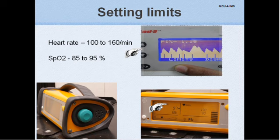Setting alarm limits is an important aspect of monitoring. In neonates, we usually set the saturation between 85 to 95 percent and pulse rate between 100 to 160 per minute. Limits can be set using these buttons or these knobs at the sides to choose the appropriate component and set as per the clinical needs.